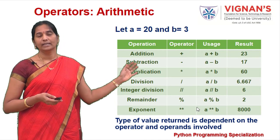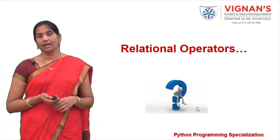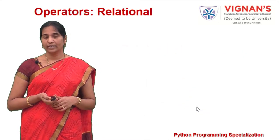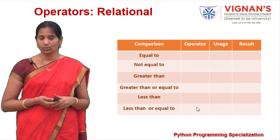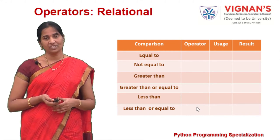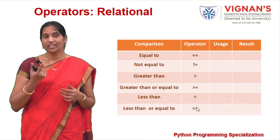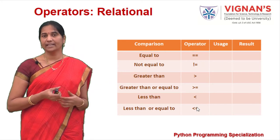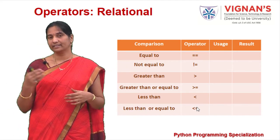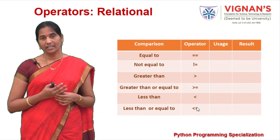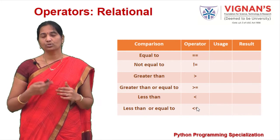Now let's see how Python supports relational operators. For comparing or checking a condition — equal to, not equal to, greater than, greater than or equal to, less than, less than or equal to — Python provides corresponding symbols: double equals for equality, exclamation-equals for inequality, and the familiar greater-than and less-than symbols.